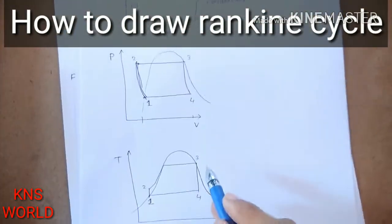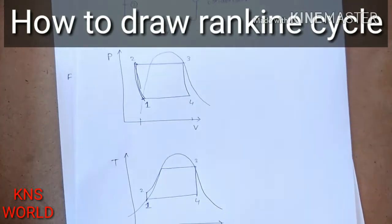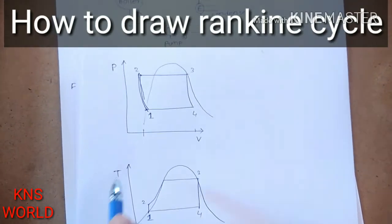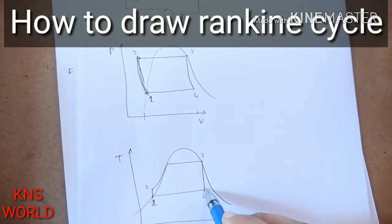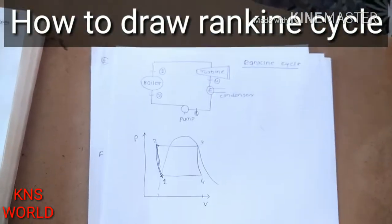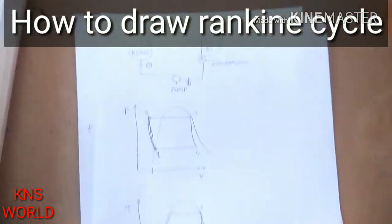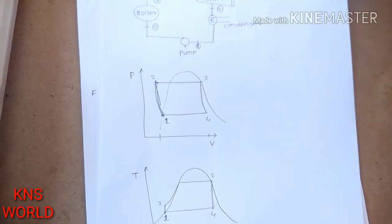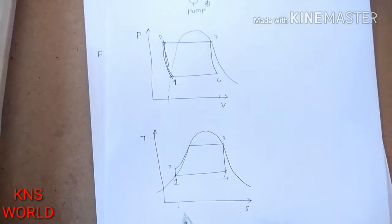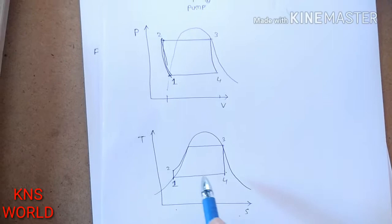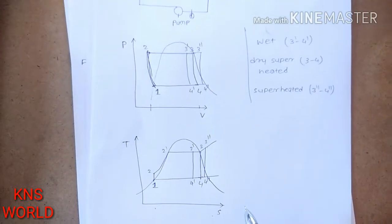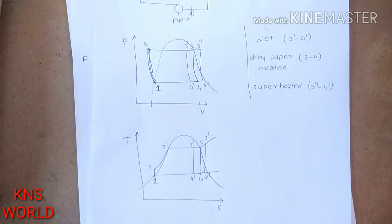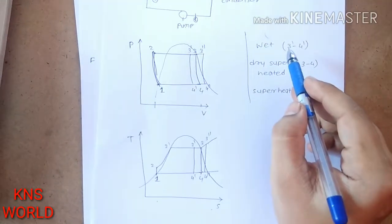From three to four, entropy is constant and temperature decreases — this is the turbine process. From four to one, the condenser is used: at constant temperature, entropy decreases. These TS and PV diagrams describe all processes of the Rankine cycle.